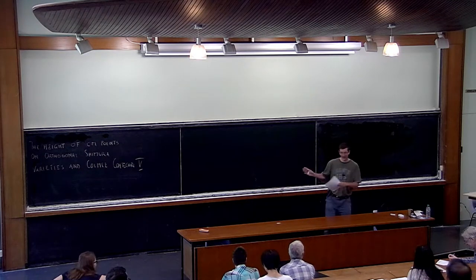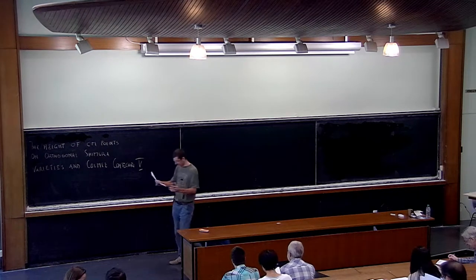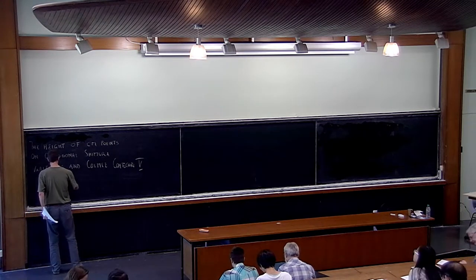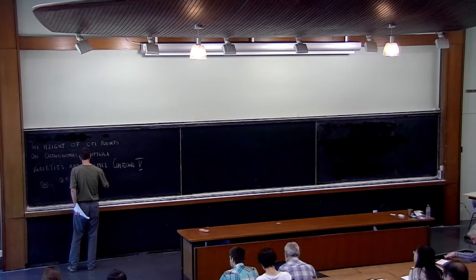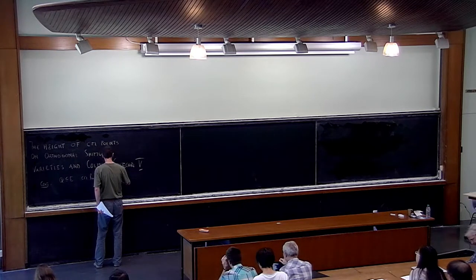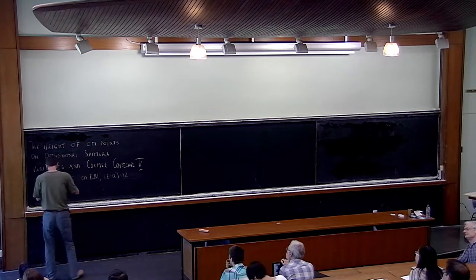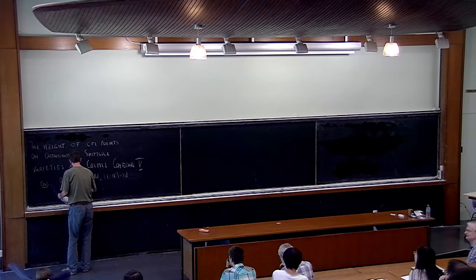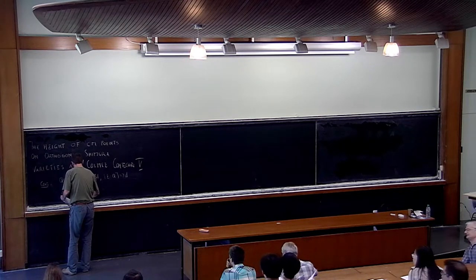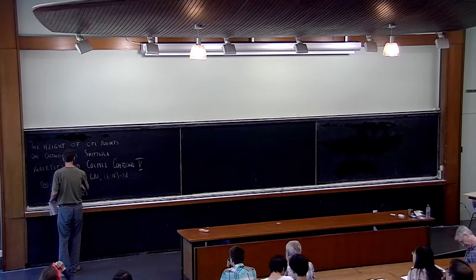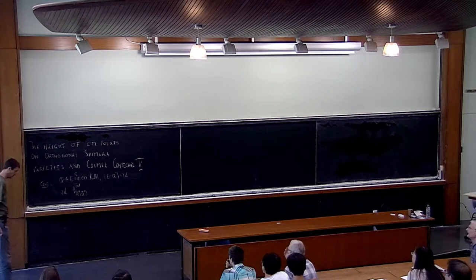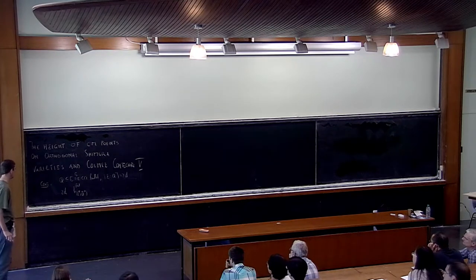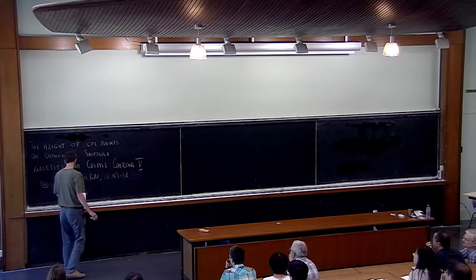After giving the first lecture of the conference and now the last lecture, let's see what we want to prove. The conjecture is the following. We fix Q inside a CM field E of degree 2D, and the quantity we want to prove is that 2D times the Faltings height associated to the variety with complex multiplication by the ring of integers over the total reflex algebra with total CM type Φ-sharp.